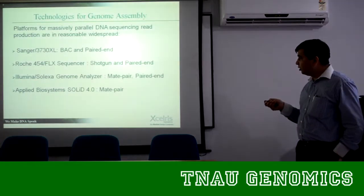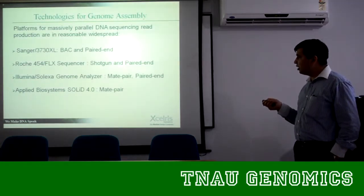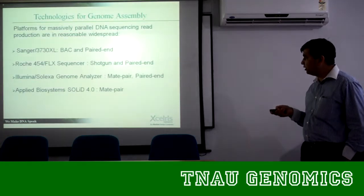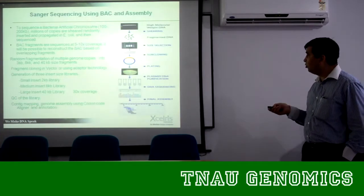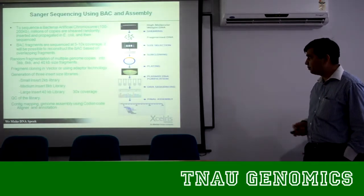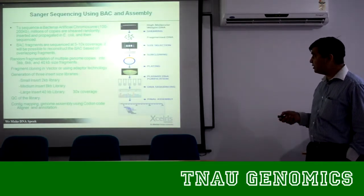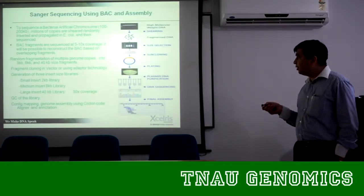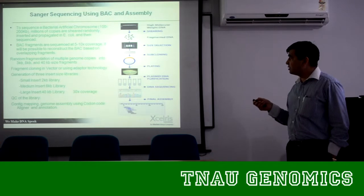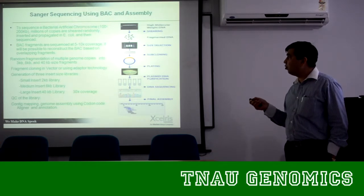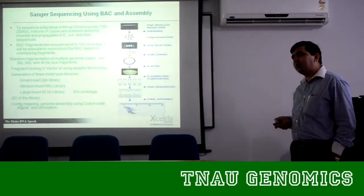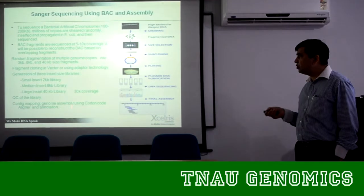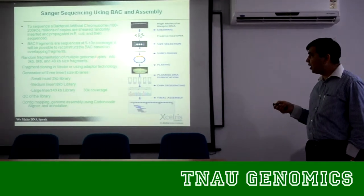So you know that this is called a paired-end of 150 KB data you are generating from the BAC. Similarly, you have an insert and paired-end using this approach. How do you generate this data? The first thing is you need to create a BAC library which has a size of 100 on average, around 150 KB.